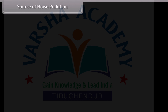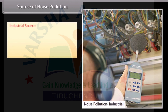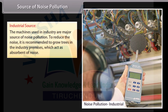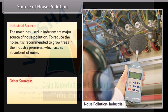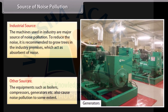The machines used in industry are a major source of noise pollution. To reduce the noise, it is recommended to grow trees in the industry premises, which act as absorbents of noise. Other sources: equipment such as boilers, compressors, generators, etc., also cause noise pollution to some extent.